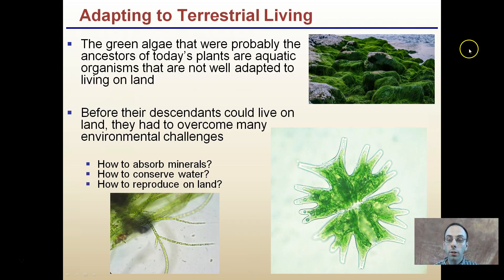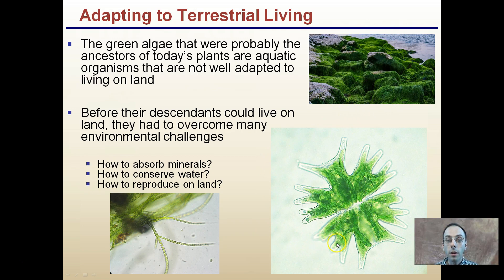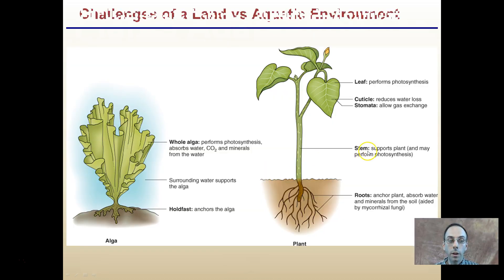Adapting to terrestrial living: green algae that were probably the ancestors of today's plants are aquatic organisms not well adapted to living on land. Before their descendants could live on land, they had to overcome many environmental challenges. Key questions are: how did these plants learn to absorb minerals? How did they conserve water being on land? And how did they reproduce on land? These are some of the major challenges plants had to face.